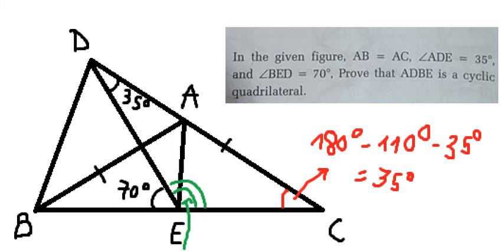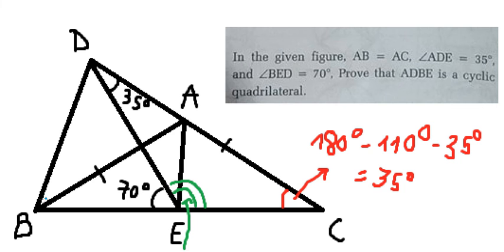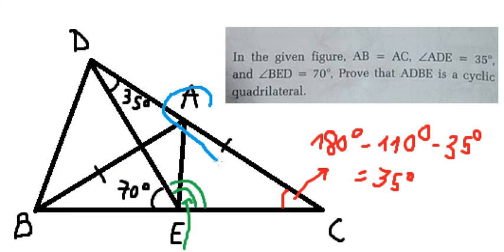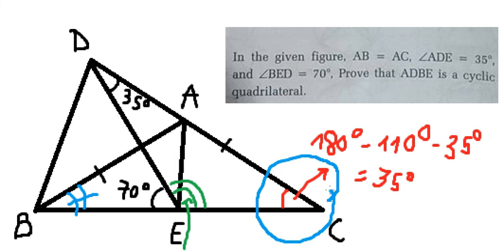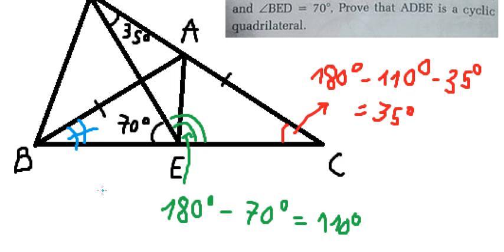Now we look at triangle ABC. Triangle ABC is isosceles since AB equals AC. That means the base angles are equal — the blue angle and the red angle are equal to each other, and both are 35 degrees.